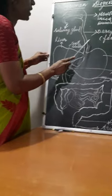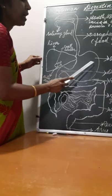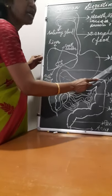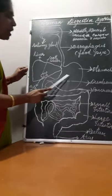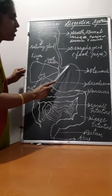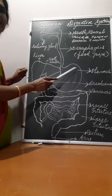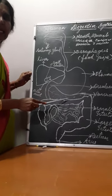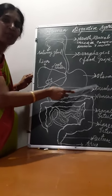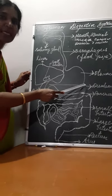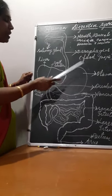The next part is the stomach. It is a J-shaped organ. The wall of the stomach contains gastric glands. I will discuss the function of gastric glands in detail later.